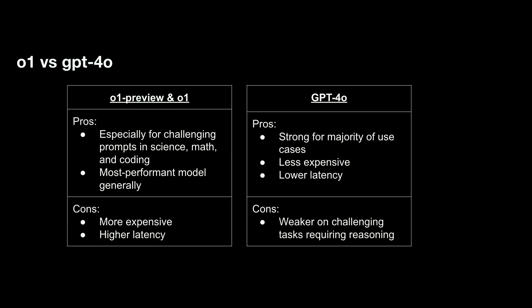I made a table summarizing when you might want to use O1 paradigm models versus GPT-4o. The pros of O1 preview and O1 are for extremely challenging prompts in domains of science, math, and coding, or if you just want the best answer without other constraints. The cons are that O1 requires time to think — it's more expensive and has higher latency. GPT-4o is still great for the majority of current API use cases, is less expensive, and lower latency, though weaker on prompts requiring reasoning, strong coding, or math.